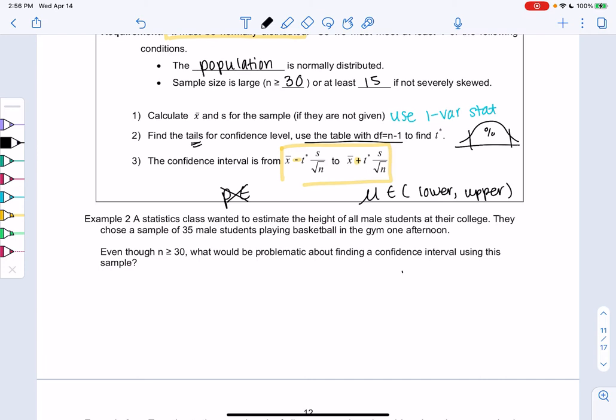So our sample size is big enough, right? 35 is big enough. It meets that requirement of 30. So even though it's at least 30, what would be problematic about finding a confidence interval using this sample?